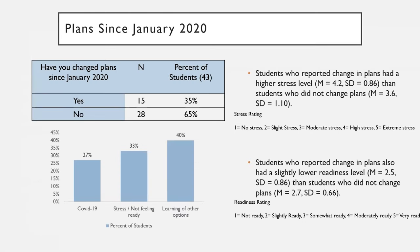Students were also asked if they had changed their educational career plans since January 2020 — again, taking that as pre-COVID times. 35% of students mentioned that yes, they did change their plans. Those students who changed their plans reported a higher stress level as well as a lower readiness level than students who did not change their plans. I also asked an open-ended question for students who mentioned a change of plans, and almost a third mentioned COVID-19 and the pandemic as the reason. About 33% mentioned feelings of stress and feeling not ready, but the majority of students changed their plans upon learning of other options available to them.